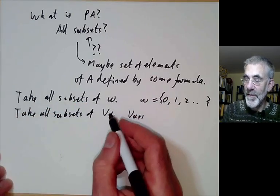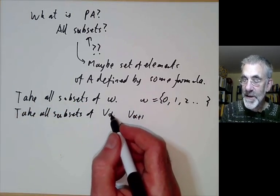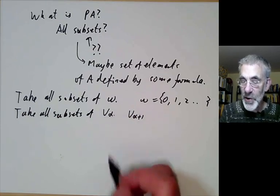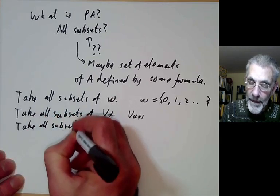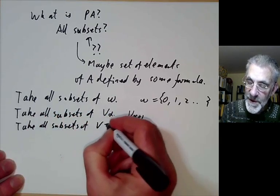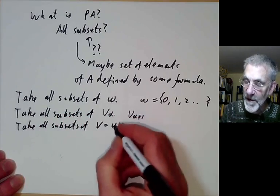Well at each limiting ordinal V alpha is just the union of the ones before so now let's take all subsets of V which is the union of all the V alpha over all alpha.